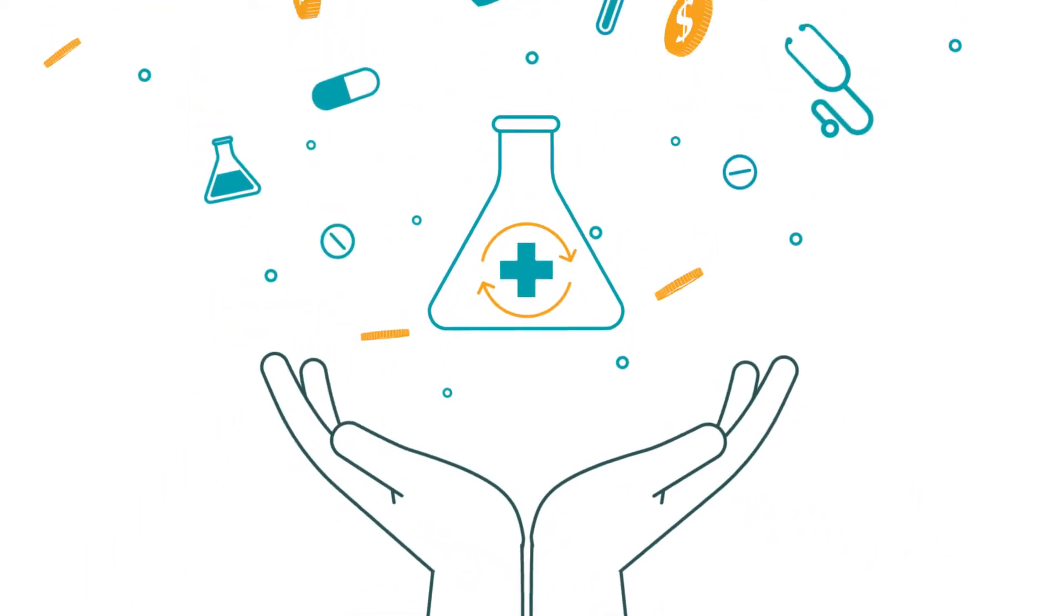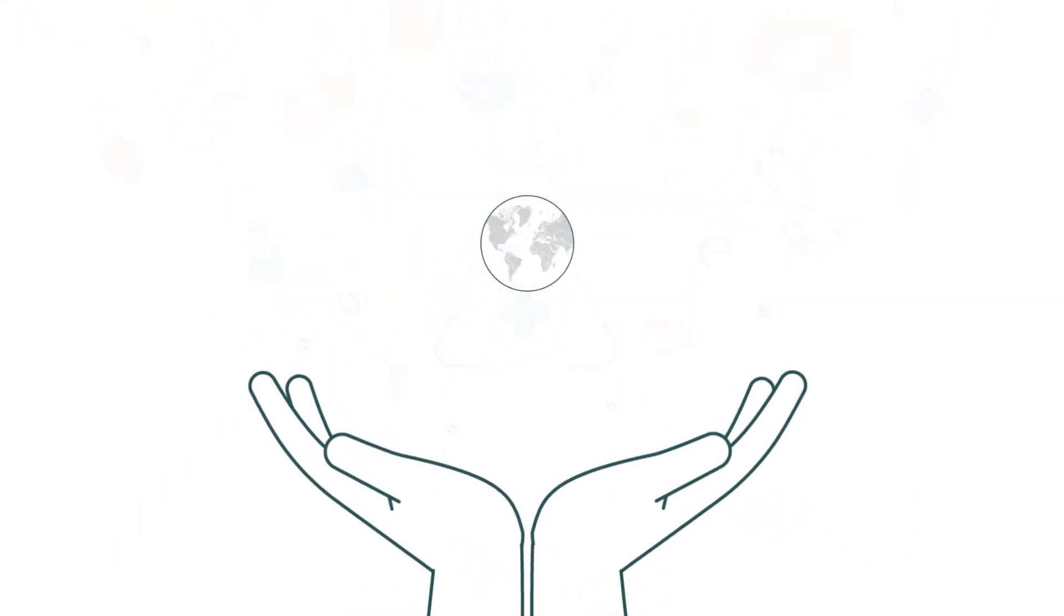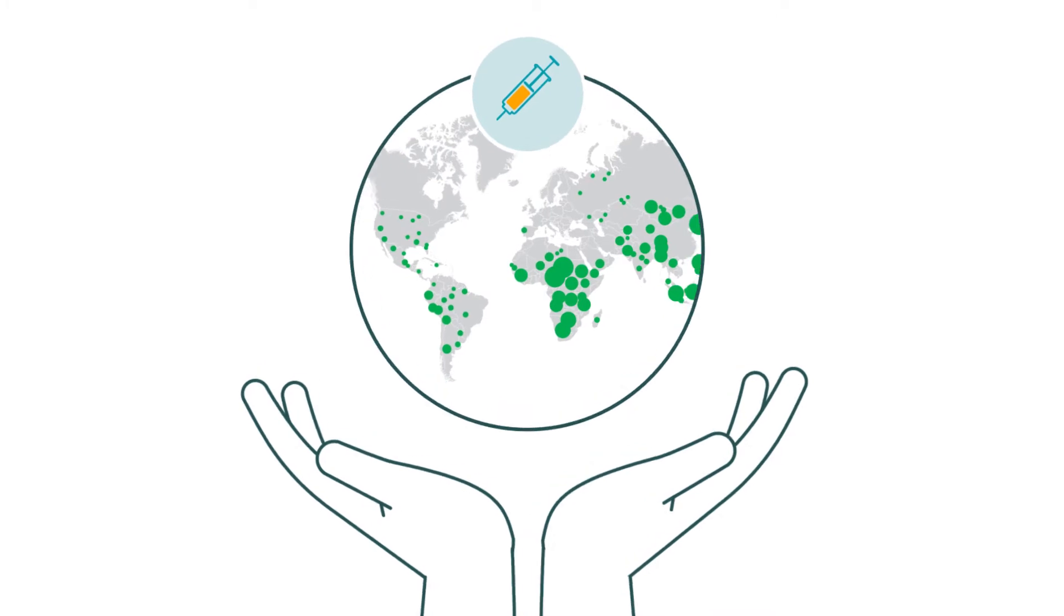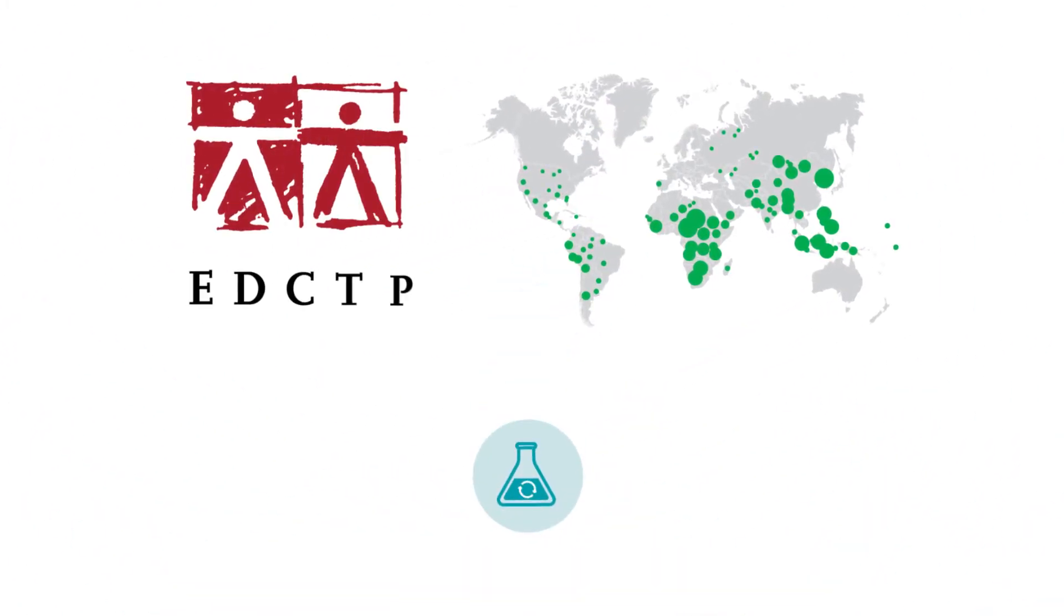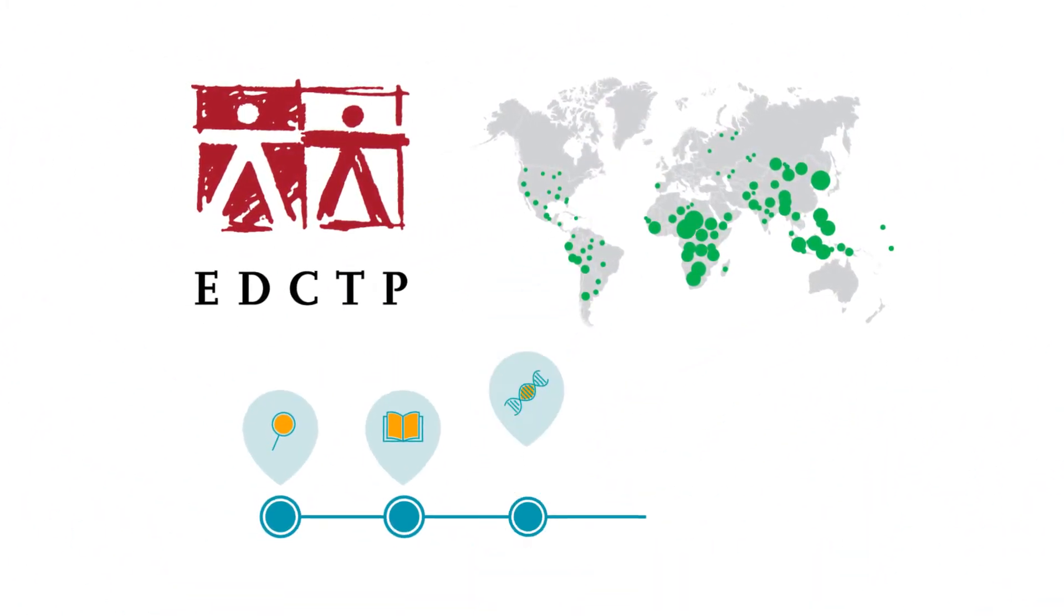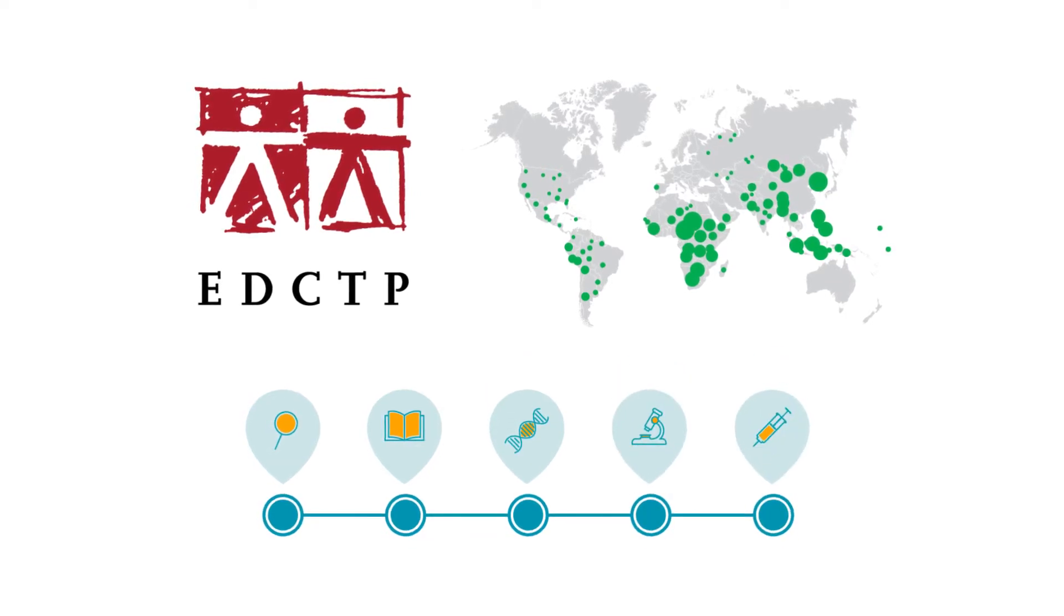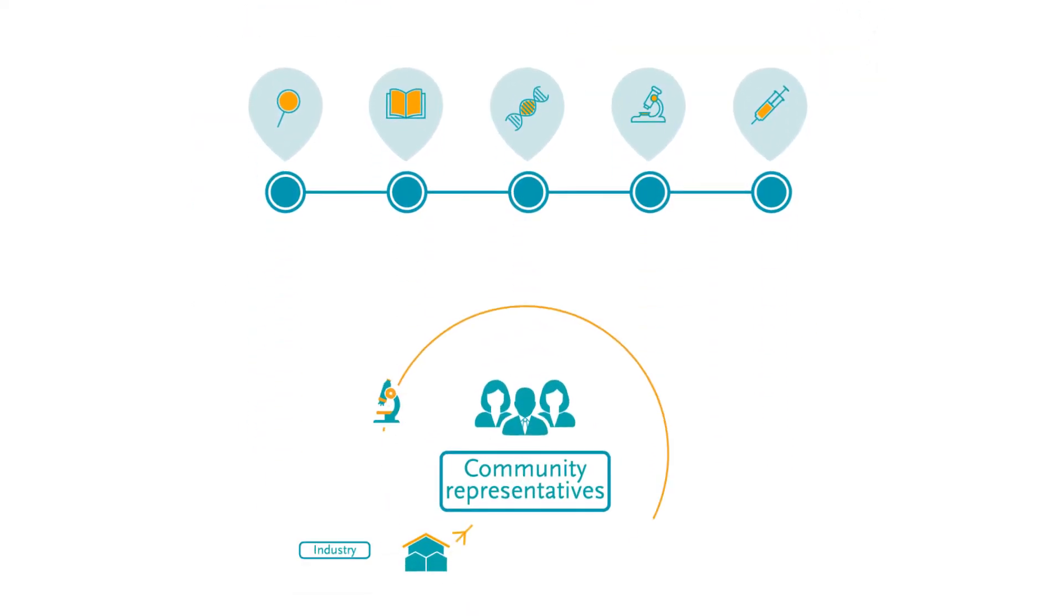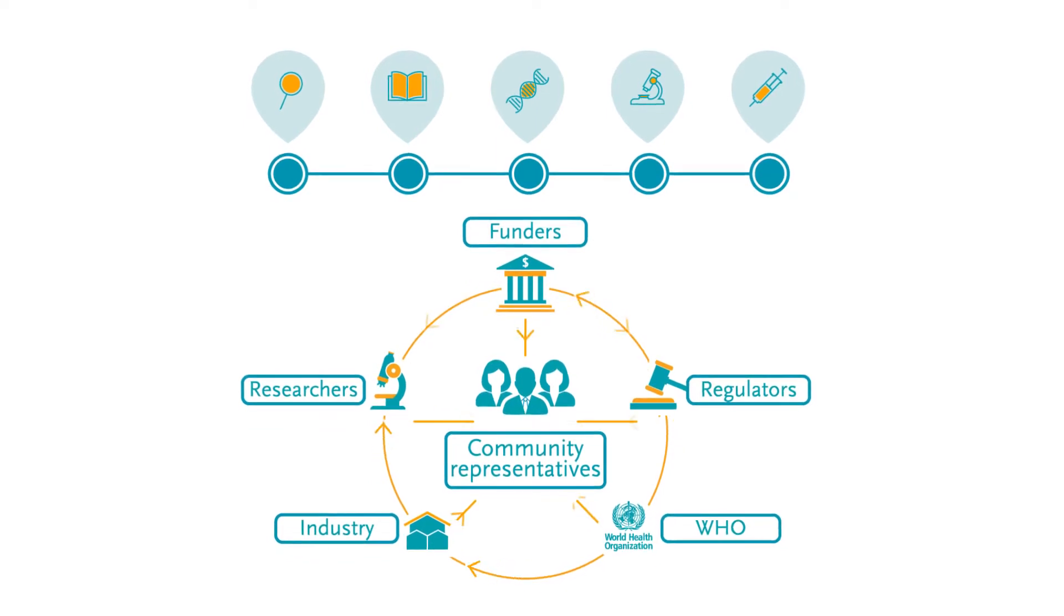To accelerate the development of tuberculosis vaccines and ensure that they reach people in need, the European and Developing Countries Clinical Trials Partnership supported the development of a global tuberculosis vaccine R&D roadmap through a highly consultative process involving various stakeholders.